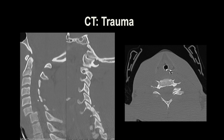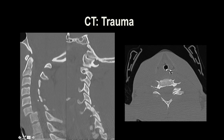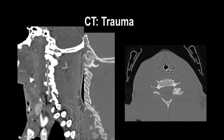CT in the setting of trauma — this is an example where we have a facet dislocation. The facets should all look nice, aligned, and symmetric. There's anterior subluxation due to facet injury, and we also have a fracture that goes into the transverse foramen. This foramen carries a vertebral artery, and anytime we have a fracture involving the foramen we're concerned for vertebral artery dissection. Therefore we performed a CTA, or computed tomography angiography, and in this case it looks fine — there was no dissection.